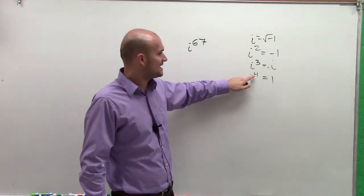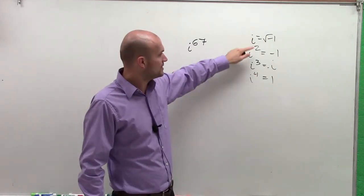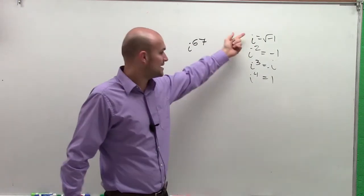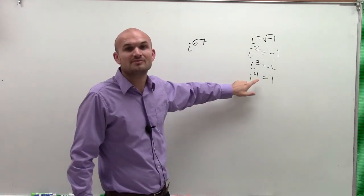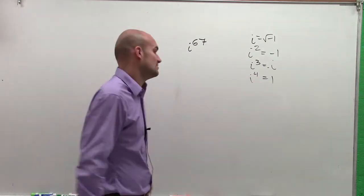So what I want to do is divide my exponent by four. Whatever my remainder is, one, two, or three, is going to be the value of i. If I do not have a remainder, that means it divides evenly, and my value of i is going to simply be one.